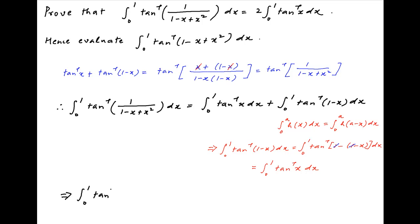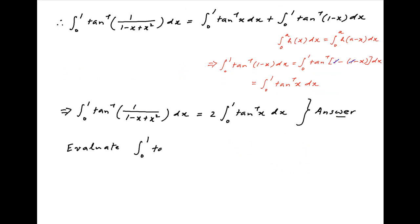the integral from 0 to 1 of tan inverse of 1 upon (1 minus x plus x squared) dx equals 2 times the integral from 0 to 1 of tan inverse x dx. The second part of the problem is to evaluate the integral from 0 to 1 of tan inverse of (1 minus x plus x squared) dx. Let's call this integral I, and let's assume the integrand on the left-hand side is equal to z, so tan of z is equal to (1 minus x plus x squared).